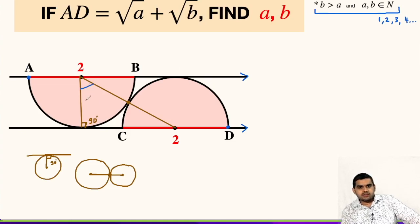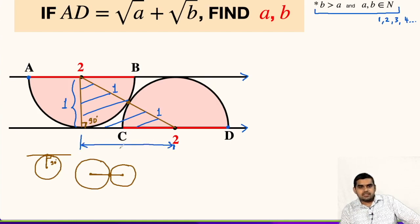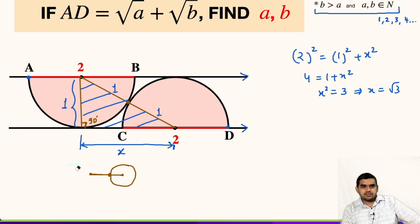Now let us focus on this right triangle. This side will be the radius of this semicircle — the diameter is 2 units, so this length will be 1 unit. The hypotenuse is 1 unit (radius of the first semicircle) plus 1 unit (radius of the second semicircle), giving 2 units. Using the Pythagorean theorem, let us name the unknown side x. So: 2 squared equals 1 squared plus x squared, giving 4 equals 1 plus x squared, so x squared equals 3, and x equals root 3.